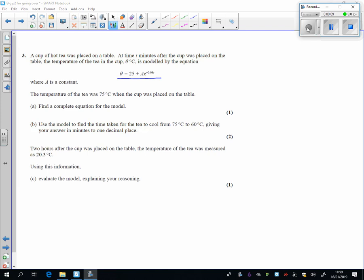Because at the moment it was placed down, so when T was equal to 0, the temperature of the cup of tea was actually 75 degrees. So if we put this into the formula, 75 equals 25 plus A times e to the 0. Take away the 25, you can see that A is going to be 50 there.